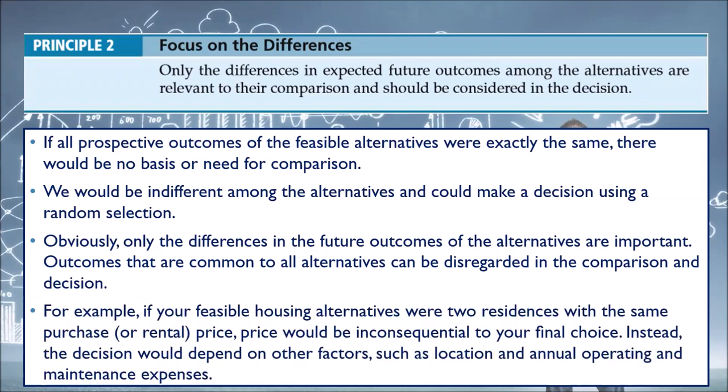For example, if your feasible housing alternatives were two residences with the same purchase or rental price, price would be inconsequential to your final choice. Instead, the decision would depend on other factors such as location and annual operating and maintenance expenses.